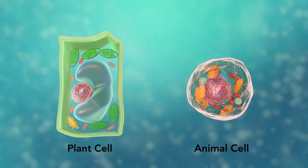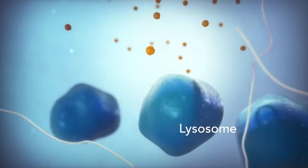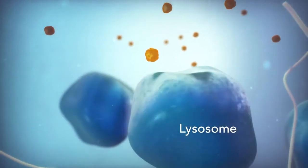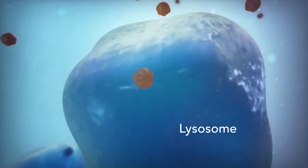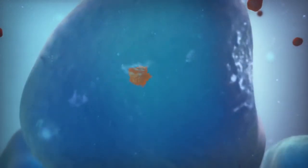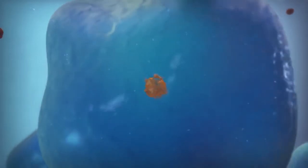Going back to the animal cell, you will see an organelle called a lysosome. Lysosomes are the garbage collectors that take in damaged or worn-out cell parts. They are filled with enzymes that break down this cellular debris.